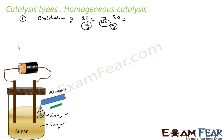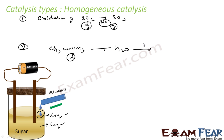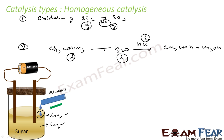Another example is hydrolysis of methyl acetate in the presence of HCl. Methyl acetate is liquid, HCl is liquid, and water is liquid — everything is in the same phase. So this is an example of homogeneous catalysis.